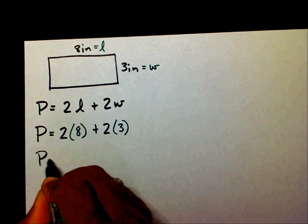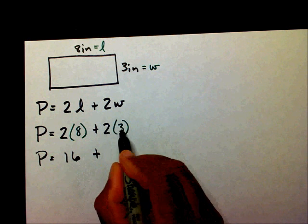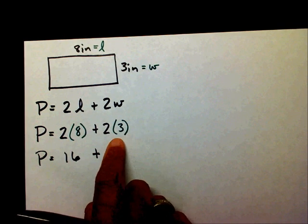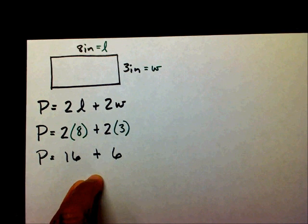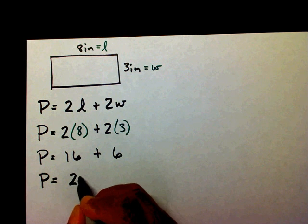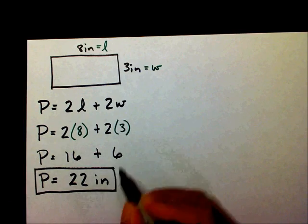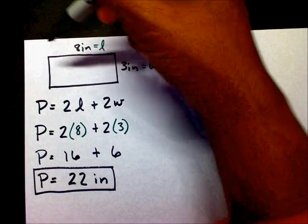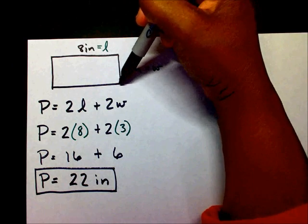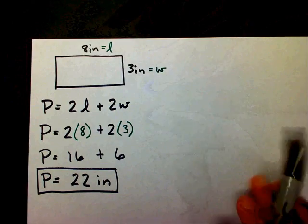Plus 2 times my width, which is 3. So P equals 2 times 8 is 16, plus 2 times 3 is 6. Remember, find this product, then find this product, then add them together. So my perimeter is going to be 22 inches. That is the distance starting at this point, going all the way around the rectangle, back to the starting point again. Let's work another one.